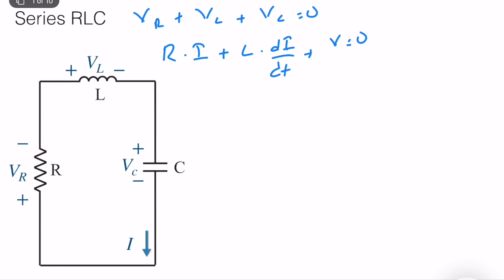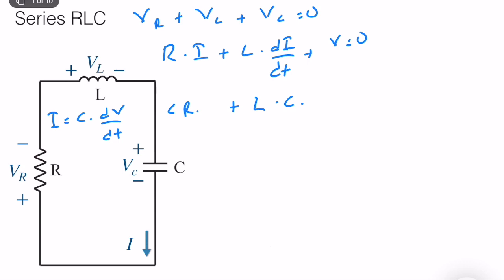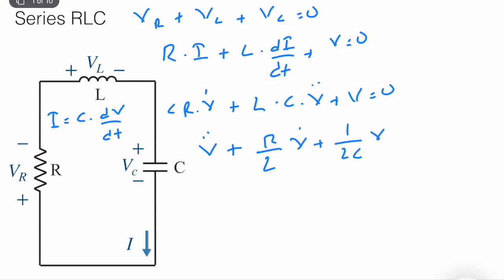Since I equals C times dV/dt, we substitute: R times C·dV/dt plus L times C times d²V/dt² plus V equals zero. Reorganizing gives us V̈ plus (R/L)·V̇ plus (1/LC)·V equals zero. This is our ODE.